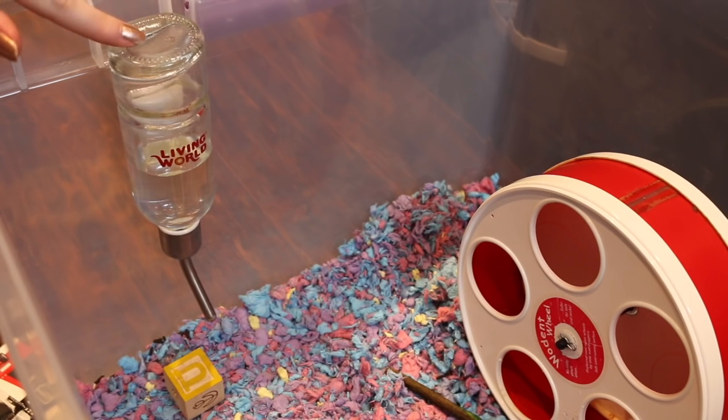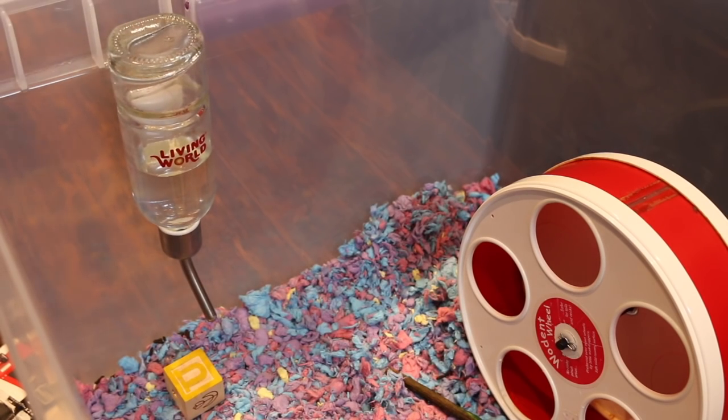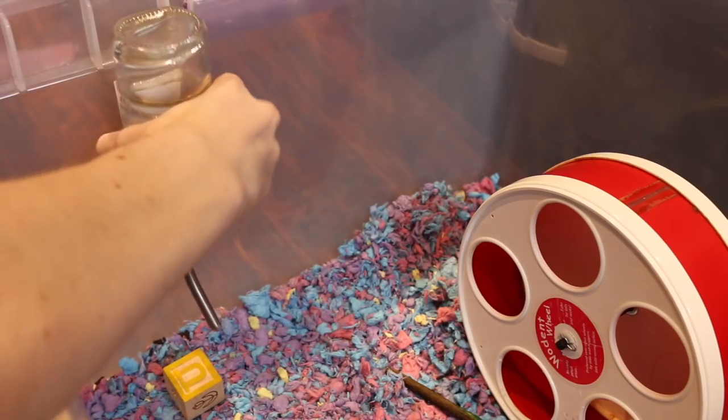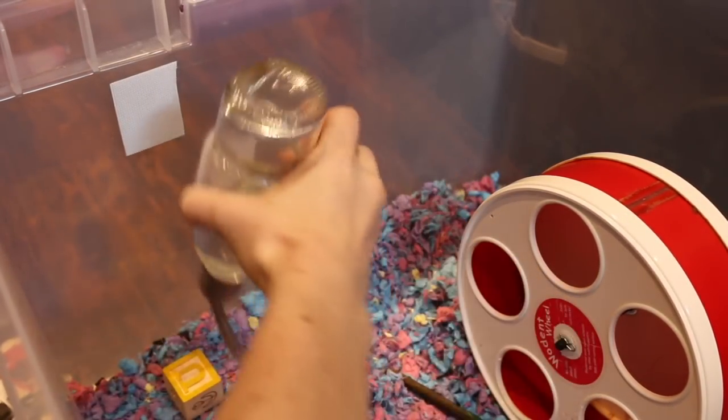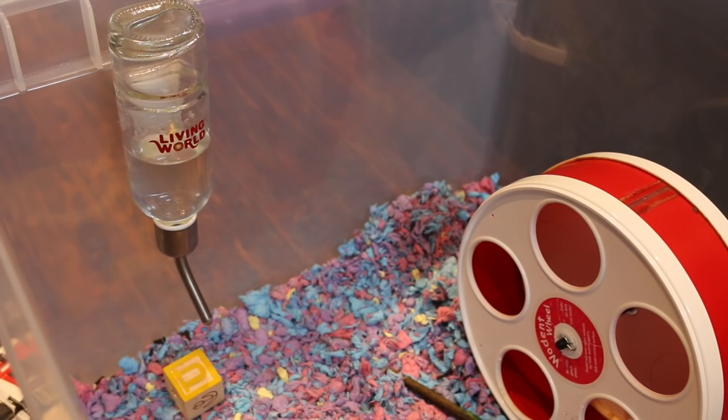As you can see, my water bottle here is just hanging. It looks like it's almost floating in the air. It is actually attached with industrial velcro, and I love this method. It's so simple and so easy, so I thought I would share it with you guys.